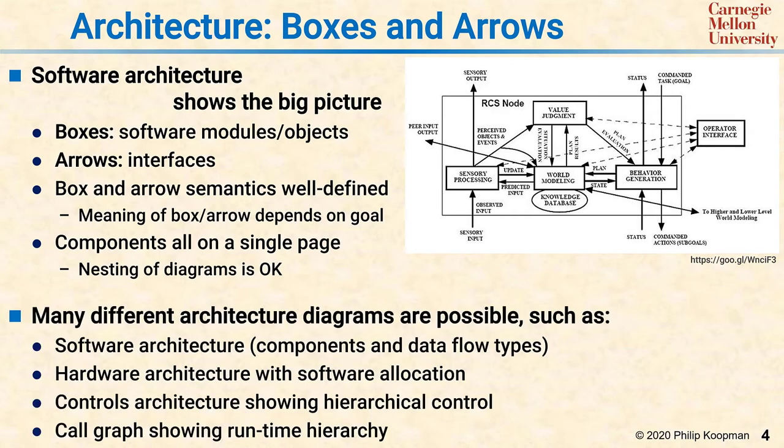There are many different types of architecture diagrams. For example, a software architecture which might have components and data flows, a hardware architecture that shows how the software components are allocated to the hardware, a controls architecture showing the hierarchical control strategy, or a call graph showing the runtime hierarchy of calls. That is not an exhaustive list — anything that is a boxes and arrows diagram talking about how different pieces work together could qualify as an architecture diagram. The art is in figuring out which diagrams convey the important essence of your system so the detailed designers remain oriented and understand the big picture.